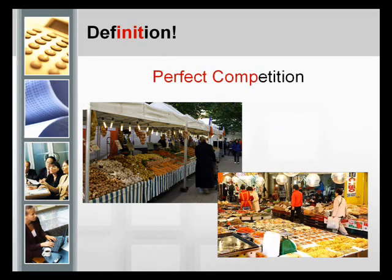Here we are going to compare between perfect competition and monopolistic competition. Before starting the main topic, let's see each market's definition. In a perfect competition market, it describes a market in which many buyers and sellers trade identical products, so that each buyer and seller is a price taker.